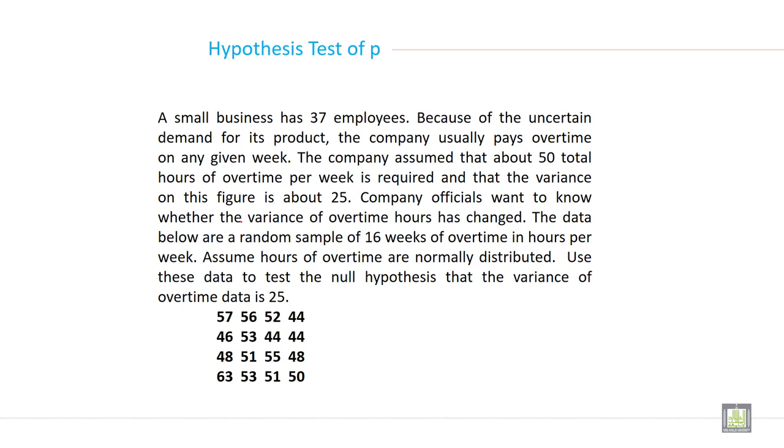Company officials want to know whether the variance of overtime hours has changed. The data below are a random sample of 16 weeks of overtime in hours per week. Assume hours of overtime are normally distributed. Use these data to test the null hypothesis that the variance of overtime data is 25.